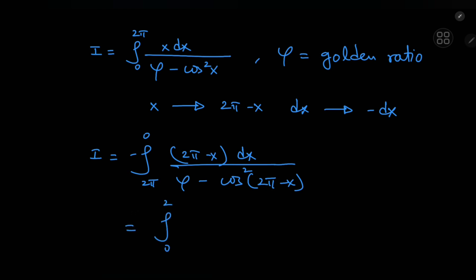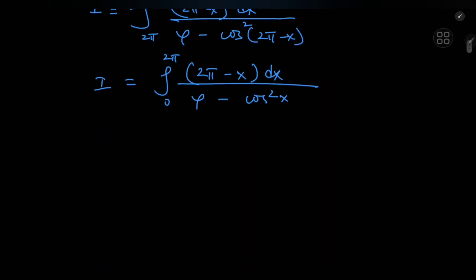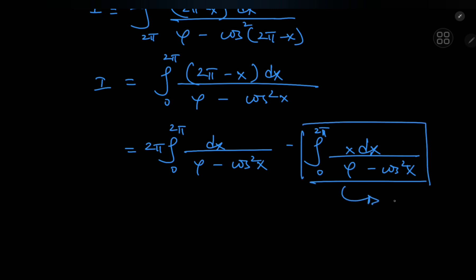So we have the integral now again from 0 to 2π of 2π minus x dx divided by φ minus the squared cosine of x. And now I can make use of the linearity of the integration operator and write this as an integral from 0 to 2π dx divided by φ minus the squared cosine of x, and this constant multiple of 2π is written outside, minus the integral from 0 to 2π of x dx divided by φ minus the squared cosine of x, which we recognize as our target integral i.